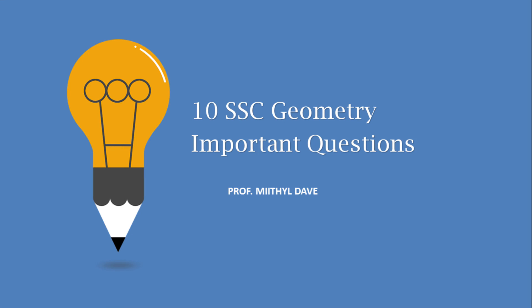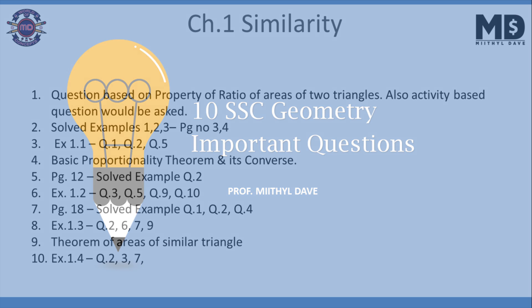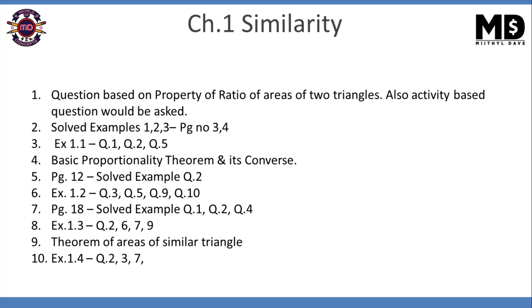10th SSC geometry important questions. Chapter 1 Similarity: questions based on property of ratio of areas of two triangles. Also, an activity-based question would be asked based on this property. Try to solve examples 1, 2, and 3 which are found on page number 3 and 4. From exercise 1.1, kindly solve question 1, 2, and 5.